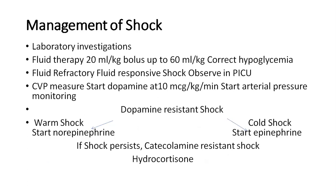Management of shock — fluid therapy: 20 ml per kg bolus up to 60 ml per kg. Correct hyperglycemia and hypoglycemia. In fluid-refractory shock, observe in PICU and measure CVP. Start dopamine at 10 mcg per kg per minute. Start arterial pressure monitoring. In dopamine-resistant shock — warm shock: start norepinephrine; cold shock: start epinephrine. If shock persists (cortisol-amine resistant shock), hydrocortisone has to be given.